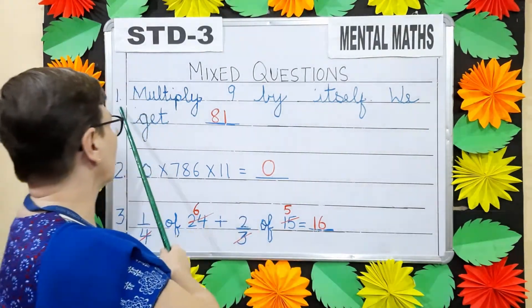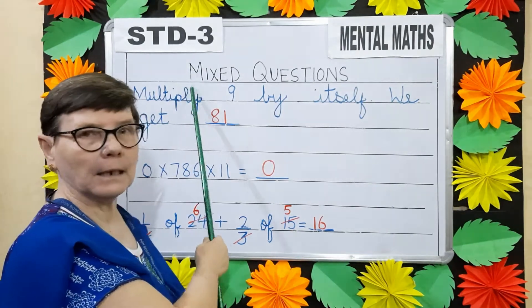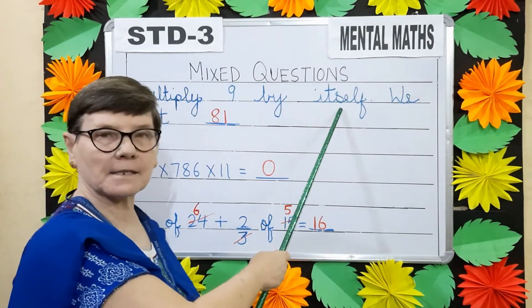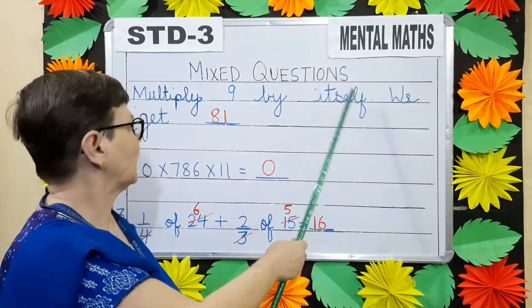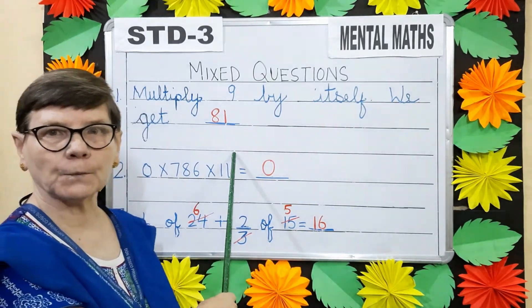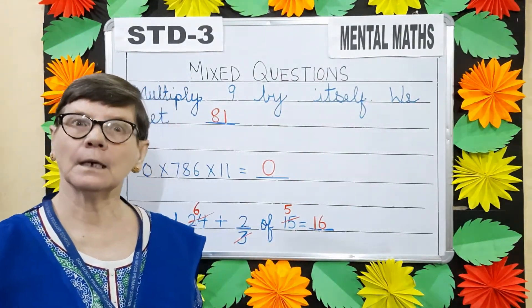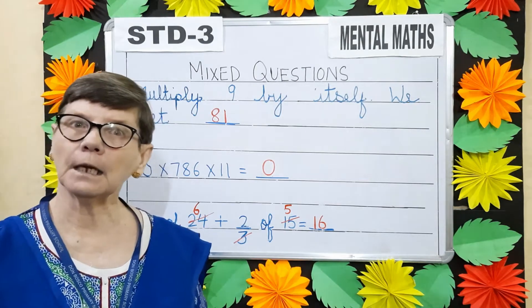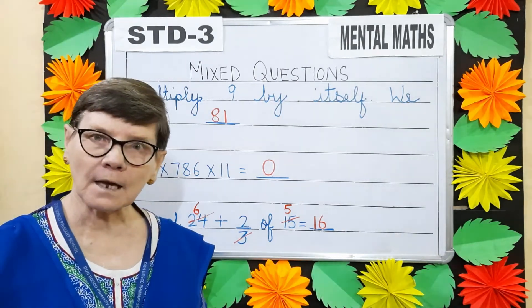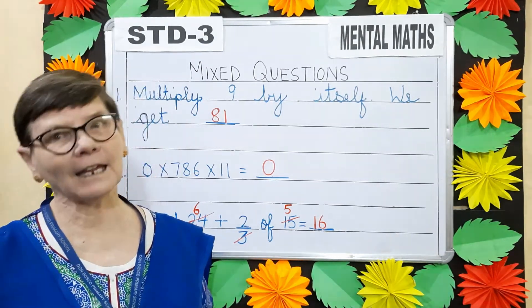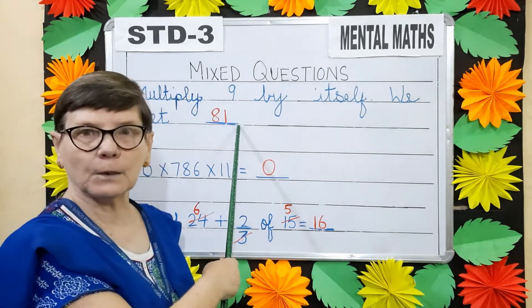Question number 1: Multiply 9 by itself. We get dash. 9 by itself means 9 into 9. So 9 nines are 81, so we write 81.